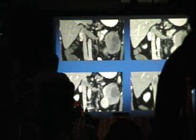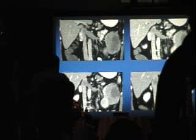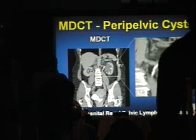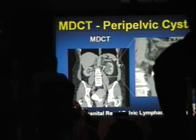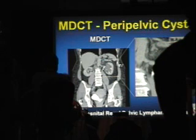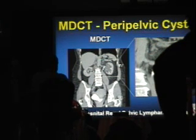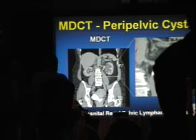Here's an example of a CT urogram in a patient with renal cell carcinoma invading the left renal vein and involving the IVC — coronal images possible with multi-detector CT today. Here's peripelvic cysts shown coronally; during the pyelographic phase the cysts are between the collecting system. The fancy name is congenital renal pelvic lymphangiectasia — these arise in the sinus lymphatics, as opposed to parapelvic cysts, which are parenchymal in origin.